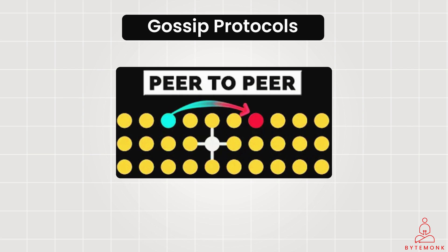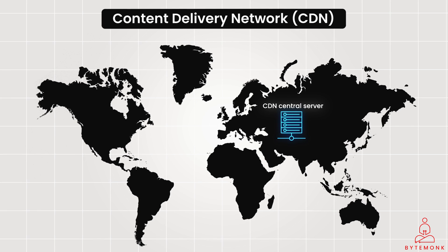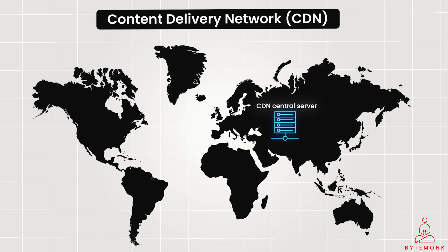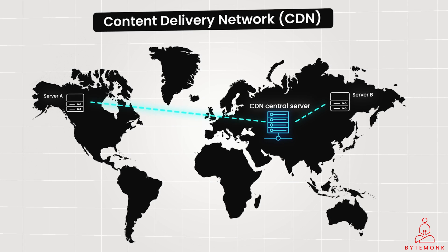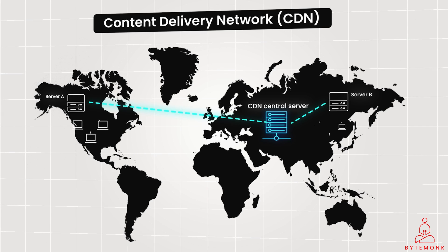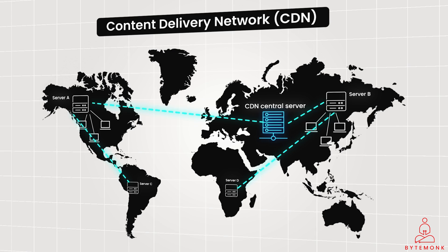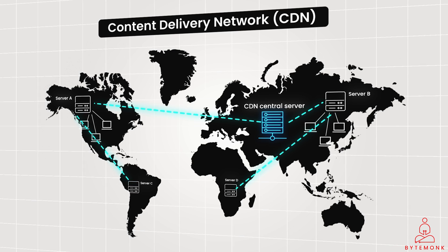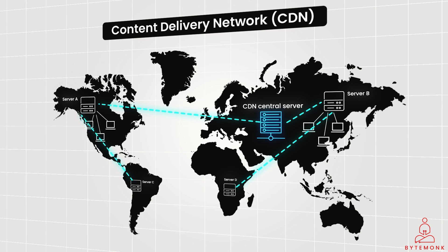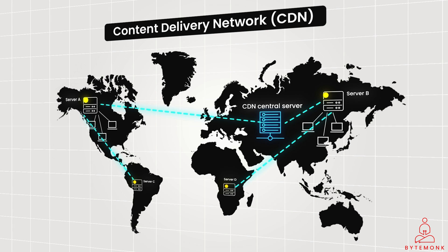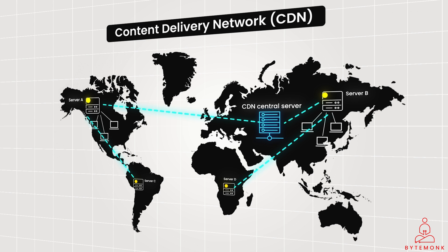Imagine you are trying to access a popular news website. Here is how a gossip protocol can be used in a content delivery network, or CDN, to deliver the latest content quickly. The CDN central server receives a new update and gossips about it to a few nearby servers — say server A and server B. Server A and B then gossip with their immediate neighbors; server A chats with server C, and server B talks to server D. This gossiping continues, with servers further from the central server receiving the information a little later. When you access the news website, a local DNS server directs you to the nearest CDN server, such as server B, which checks its local cache and serves the latest version quickly.